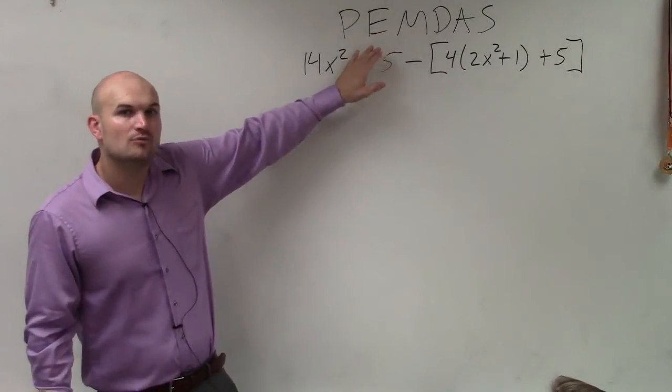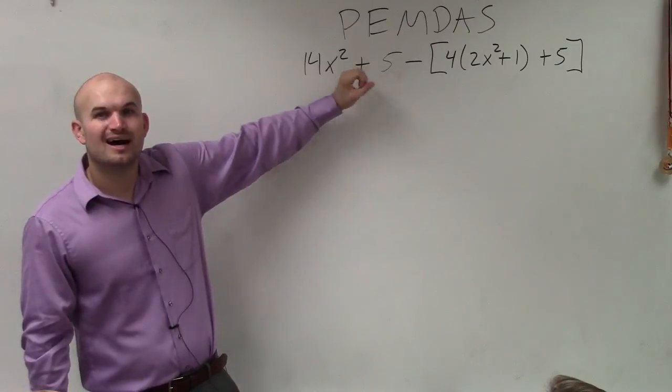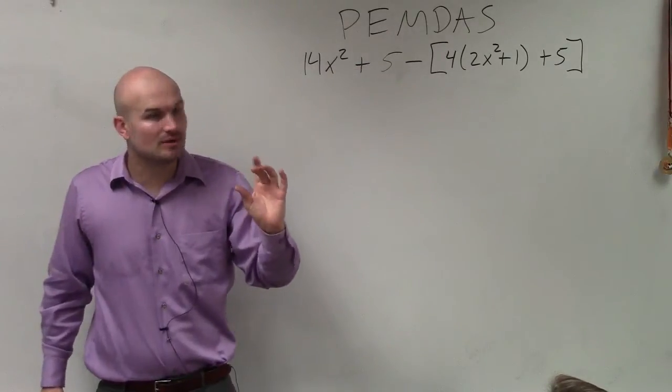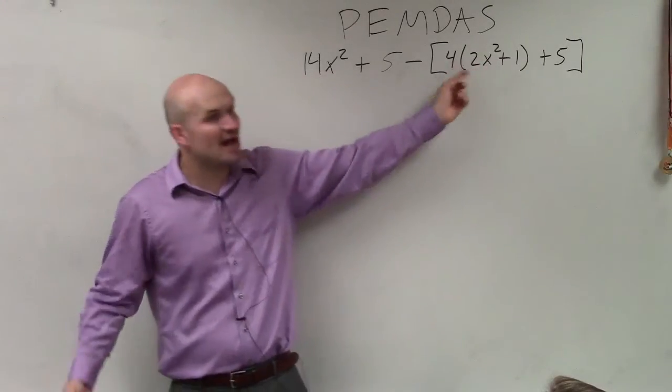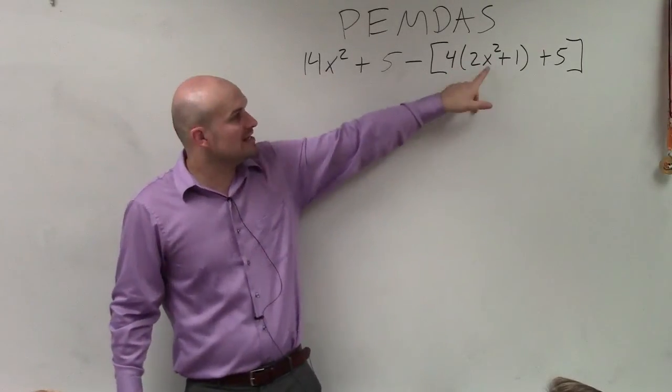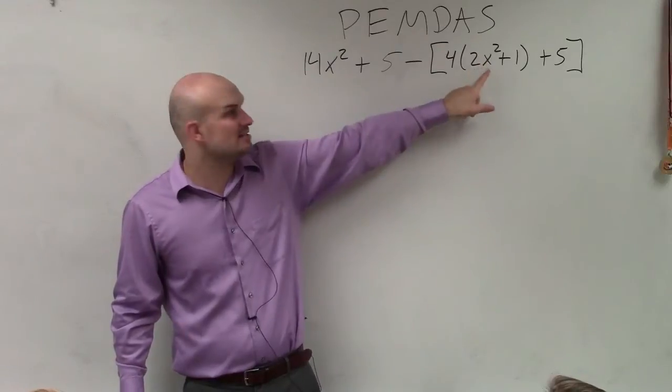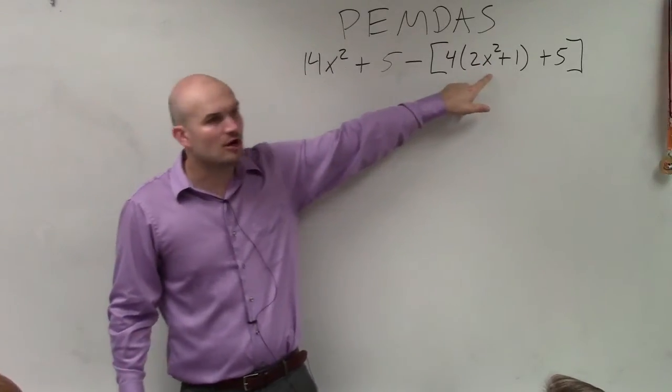Well, when we're looking at grouping symbols, you always want to look at the innermost grouping symbol. So we have brackets, right? And then inside of brackets, we have parentheses. So we want to see, can we simplify inside the parentheses? Can you simplify 2x squared plus 1? No, right? They're not like terms.